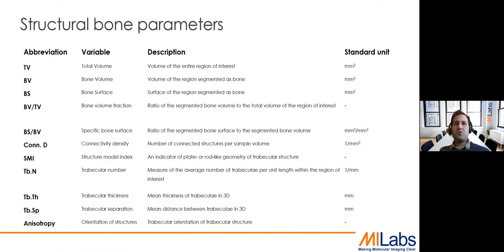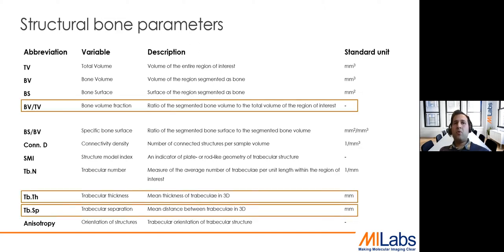There are several structural bone parameters. Some of the most common ones are bone volume fraction, which is the bone volume divided by the tissue volume; trabecular thickness; and trabecular spacing. These three parameters are the most popular ones for orthopedicians to assess whether anything is wrong with the bone structure and morphology. My talk, when it covers evaluation of bone architecture, will mainly focus on these three parameters.